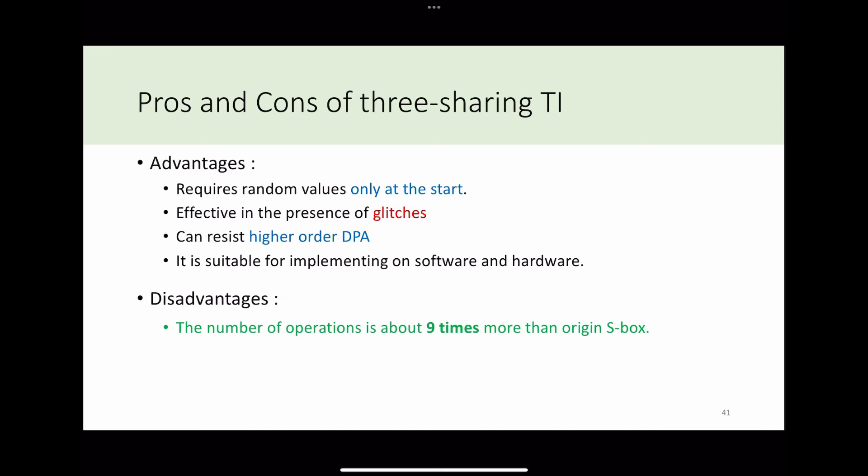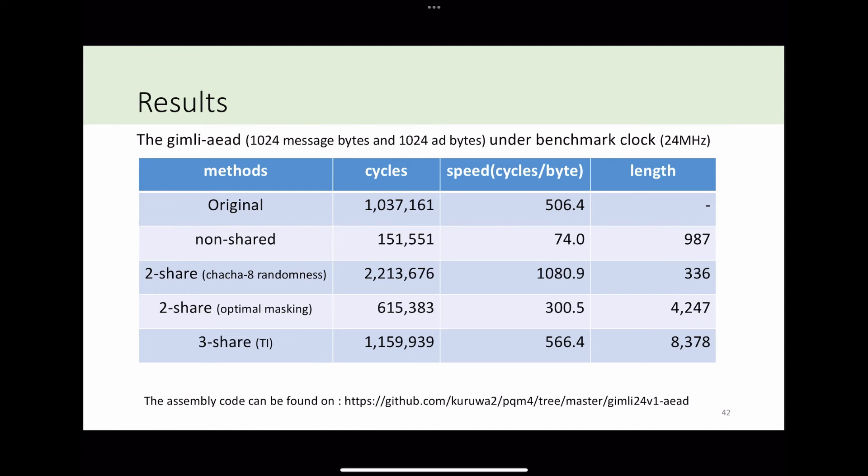Just like the optimal masking, three-share threshold implementation requires random numbers only at the start. The biggest advantage of threshold implementation is it is secure, but it also produces overhead due to three-share masking. However, it is still faster than two-share masking with randomness. After our optimization, three-share threshold implementation costs about 500 to 600 cycles per byte. It is a fast and secure masking implementation.